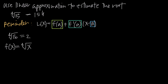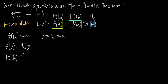Since 16 is very close to 15 and we can easily find its fourth root — we already know that's 2 — we're going to say a equals 16. We'll plug 16 in for a into our equation. To find f(16), we just plug 16 in for x: the fourth root of 16 is 2, which we already calculated. So f(16) = 2.